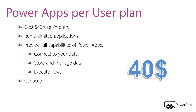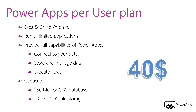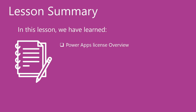The PowerApps Per User Plan capacity gives you 250 MB for Common Data Service database, 2 GB for Common Data Service file storage, and an API request limit of 5,000. These are the different PowerApps plans. In this lesson, we have learned that the PowerApps license is the first gateway to access PowerApps, and we discussed the different standalone PowerApps licenses consisting of the free plans and the purchased plans.